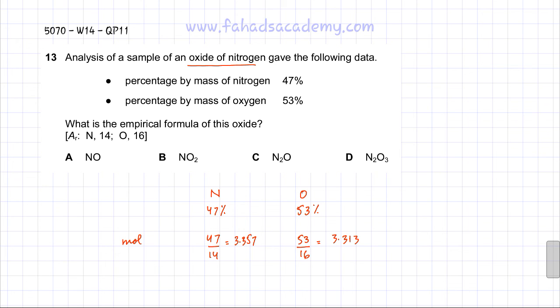The next step is you find the simplest ratio. To find the simplest ratio, divide by the smallest, which in this case is going to be between the two values, the smallest value is 3.313. And this also divided by 3.313. Now, approximately, the simplest ratio that's coming out to be is going to be 1 ratio 1.